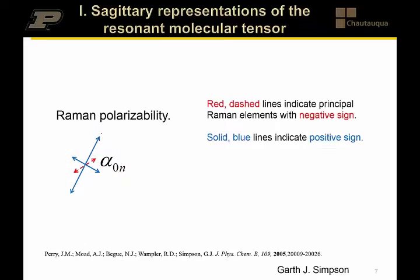In any coordinate system, you can reconstruct the Raman polarizability from the three diagonal elements in the principal coordinate system, just like a principal moment of inertia. Unlike moments of inertia, the Raman polarizability can have either a positive or negatively signed electric field relative to the driving field. A negative sign is depicted by a red dashed arrow as opposed to a solid blue arrow, so you can track both magnitude and sign for the principal moments through this simple Sagittary representation.